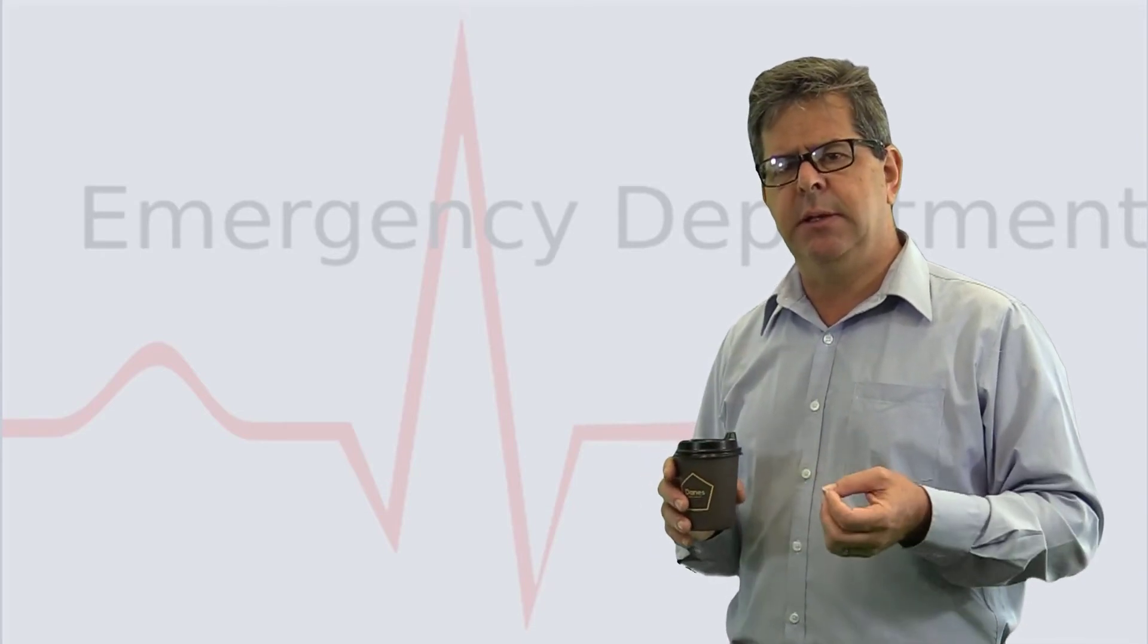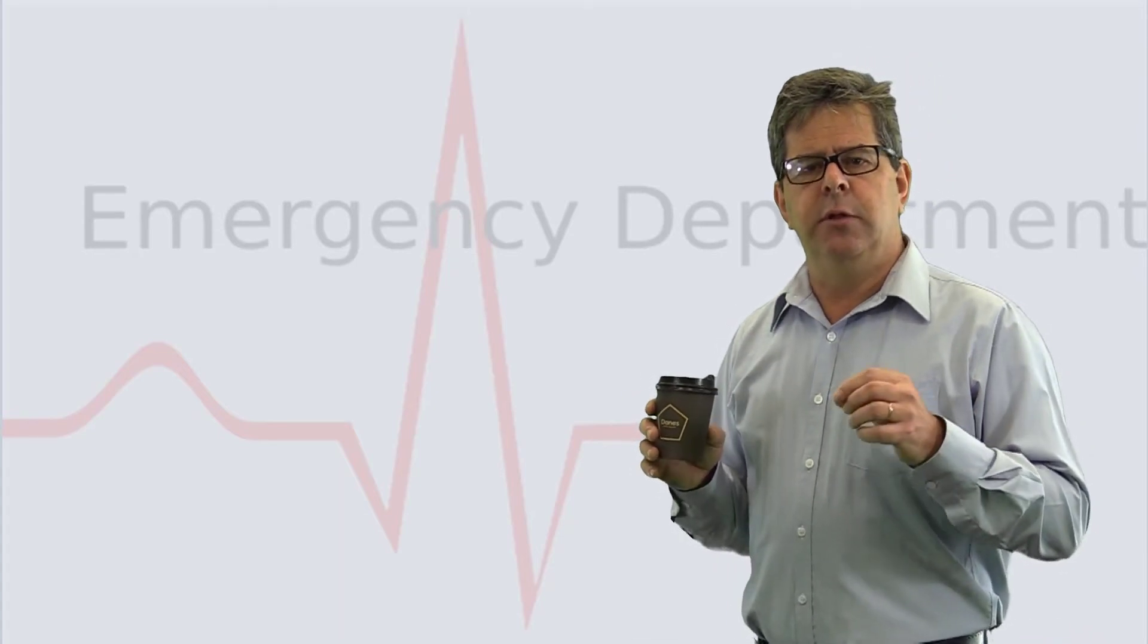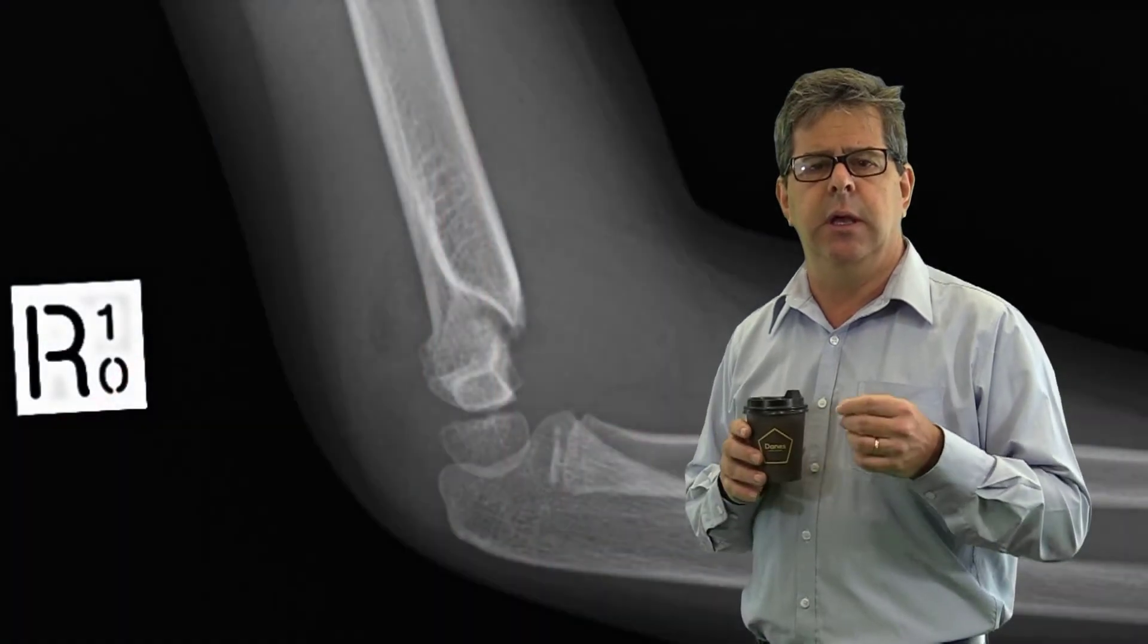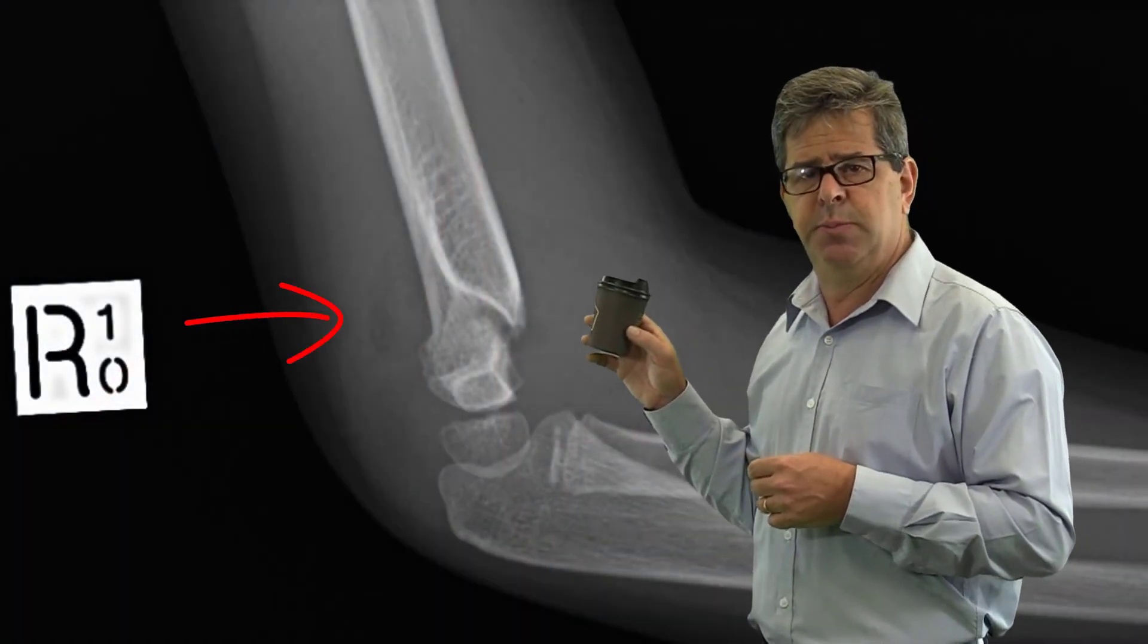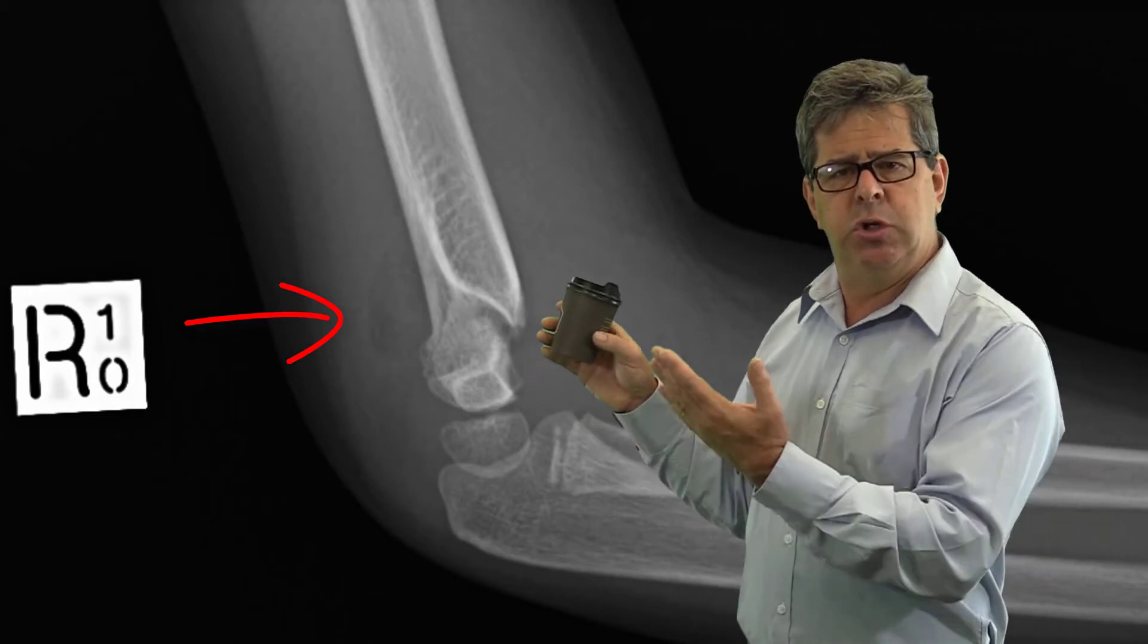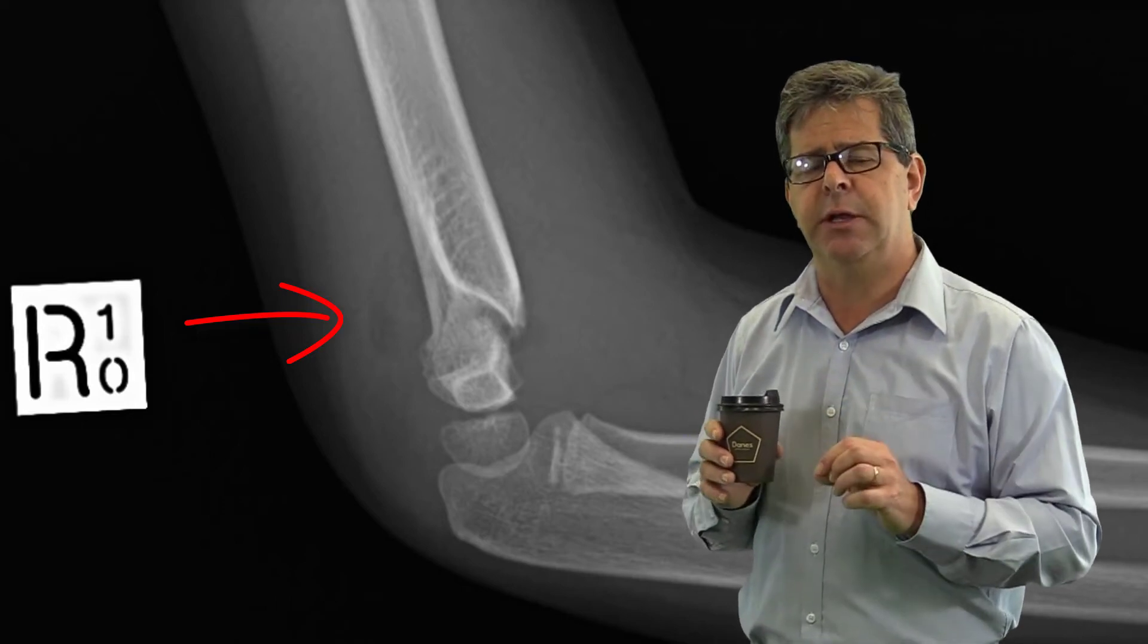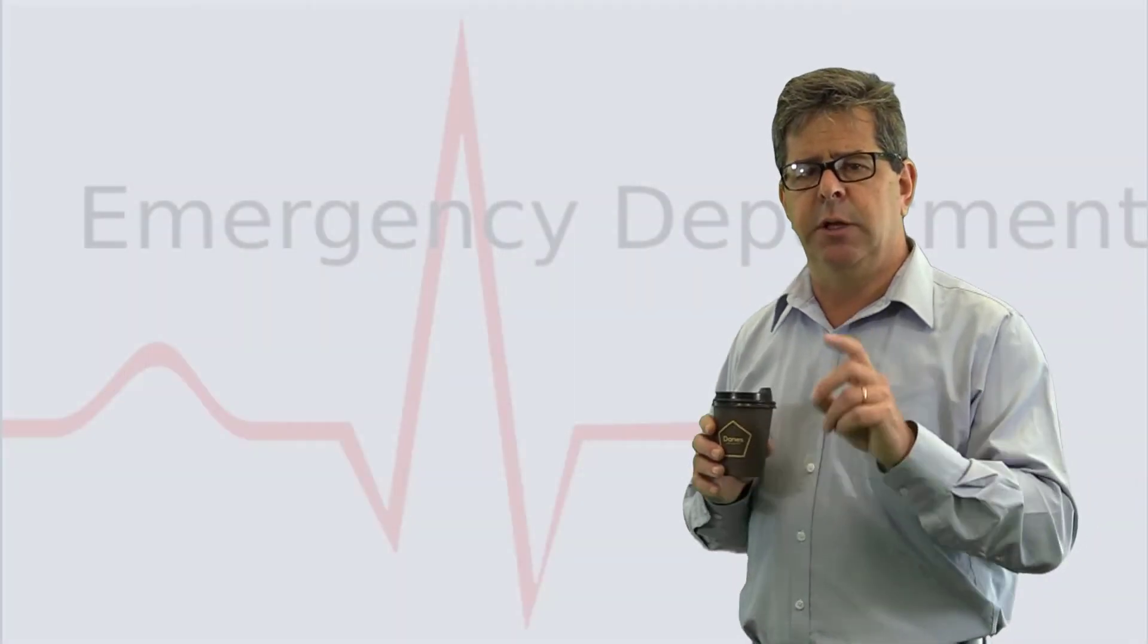How can you suspect it? How can you decrease the chances of missing them? If you look on a lateral x-ray and see a posterior fat pad sign like this, you'll be suspicious. That means there's blood inside the joint. You shouldn't see that posterior fat pad pushed out like that.